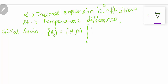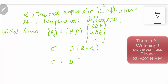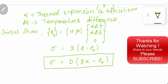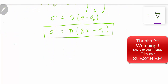After the element is subjected to thermal expansion, stress is found using σ = D·(B·u − ε0). The temperature force matrix is calculated as: F = Bᵀ·D·ε0·A·t.